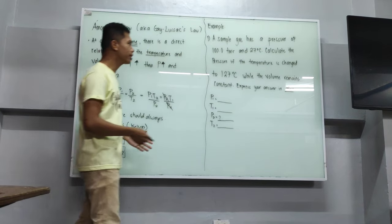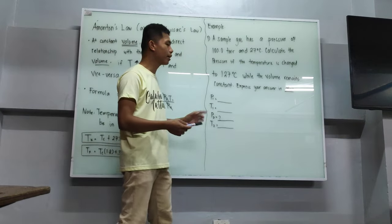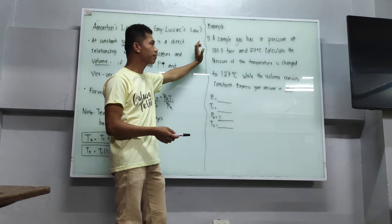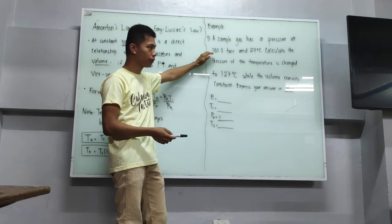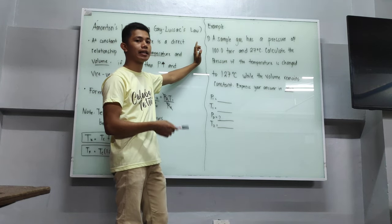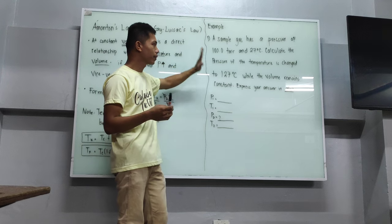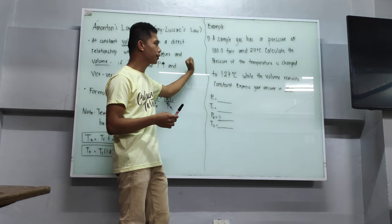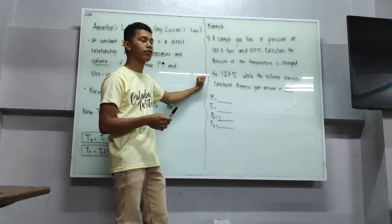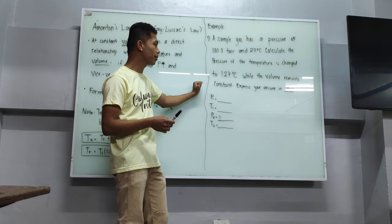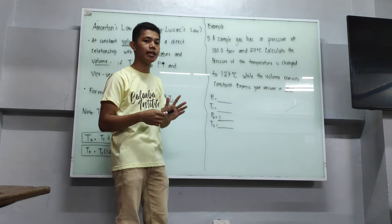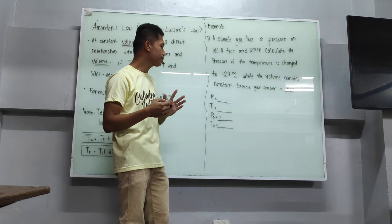Now let us have an example. Example: A gas has a pressure of 100 torr at 27 degrees Celsius. Calculate the pressure if the temperature is changed to 127 degrees Celsius while the volume remains constant. Express your answer in ATM or atmosphere.